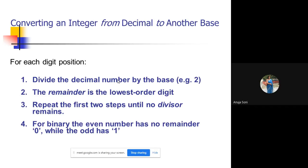You have to divide that decimal number successively by the required base, and whatever remainders are generated, you have to concatenate all the remainders in the reverse form. That will ultimately give you the final resultant value generated in the desired base.